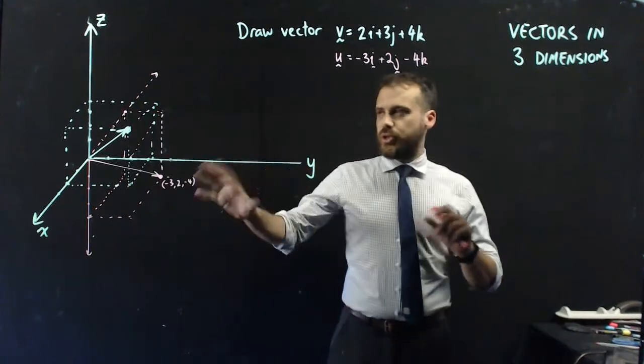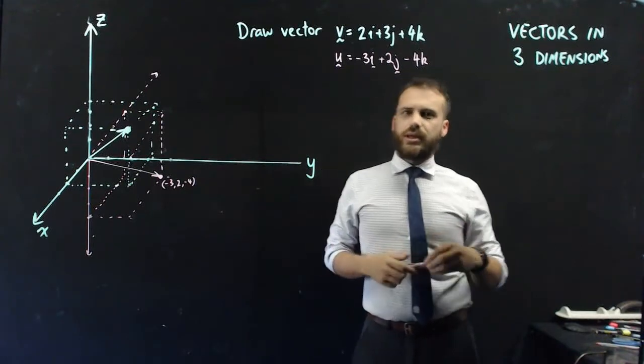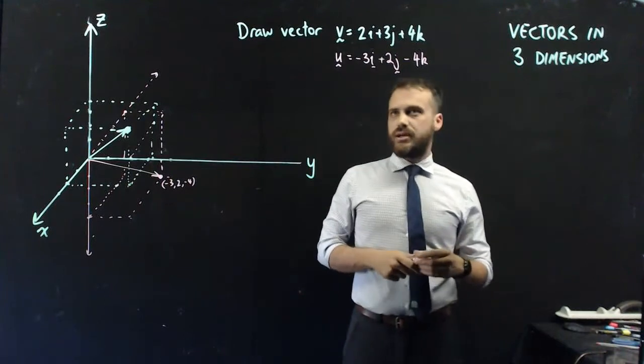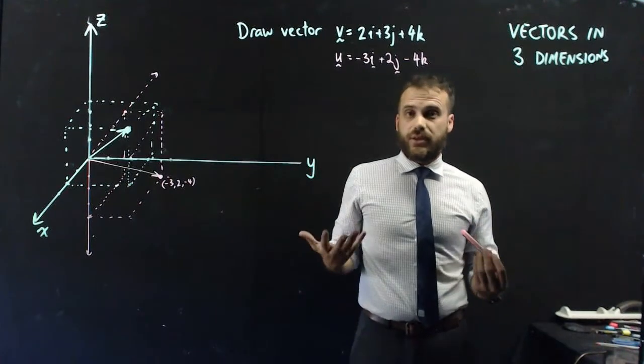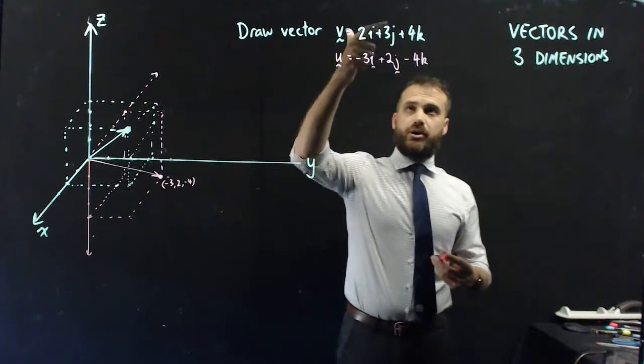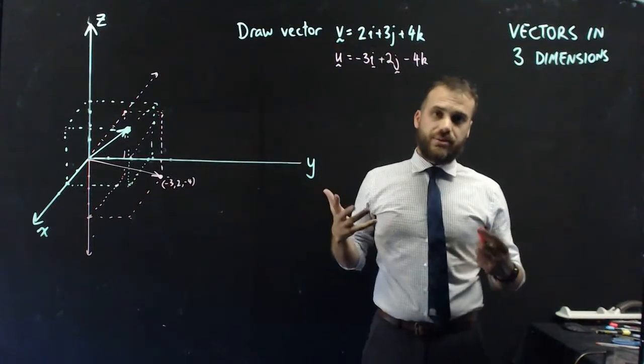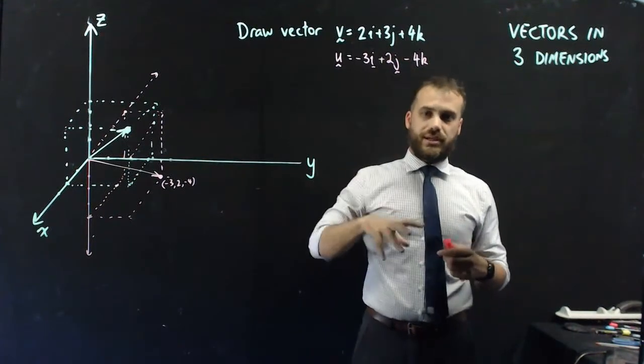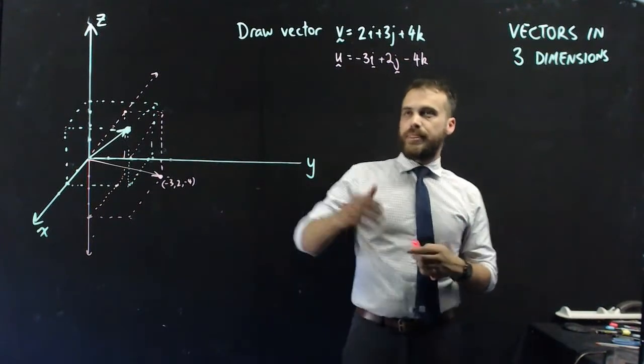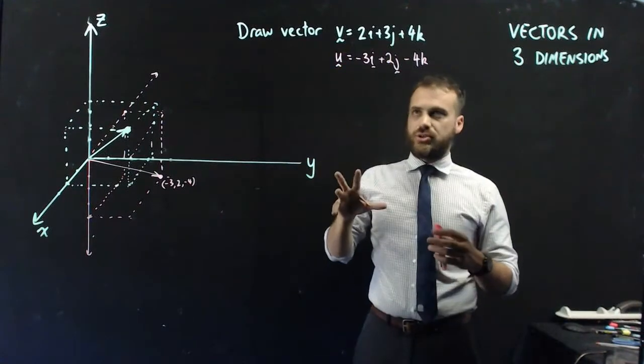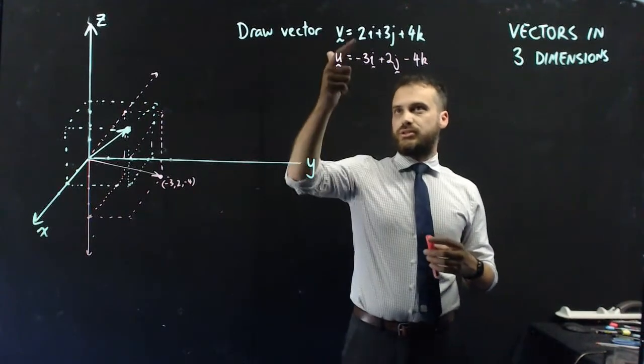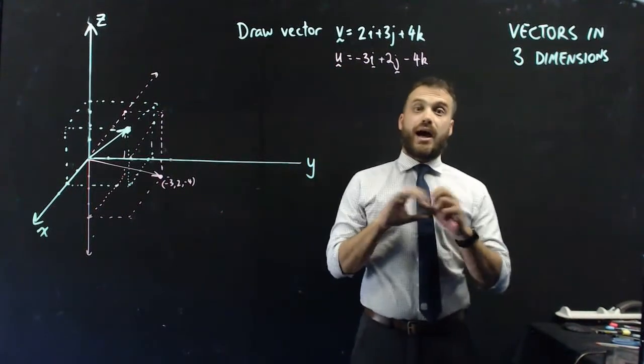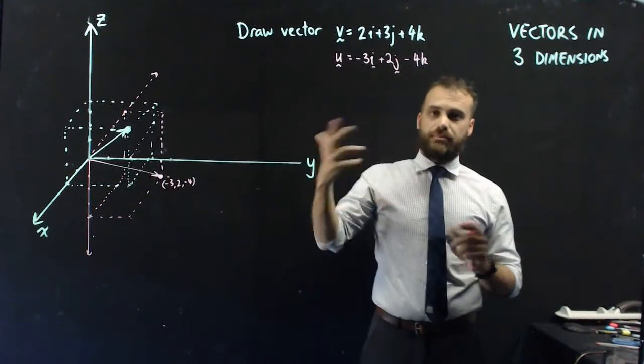Now, the question is, what can I do with two three-dimensional vectors? Well, anything you can do with two two-dimensional vectors, you can do with two three-dimensional vectors. So, if I wanted to add them together, that would be really straightforward. I just add the i components, add the j components, add the k components. Now, in this one, something really interesting happens, and the k components cancel out. So, we end up back on the plane. And when we add these two together, we'll get 2 plus negative 3, which is negative 1. 3 plus 2, which is 5. So we can add three-dimensional vectors by adding their components.